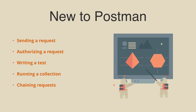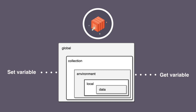So what does it mean when we say chaining requests? We're talking about extracting data from one response and then using that data in a different request. With variables. Storing a value and accessing it later is something that most developers are familiar with. In this video we'll use environment variables, but you could also use global or collection variables to do the same thing.